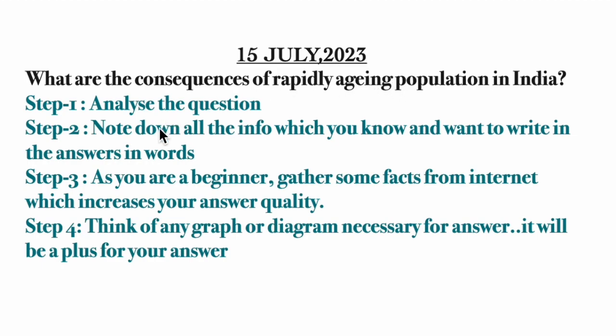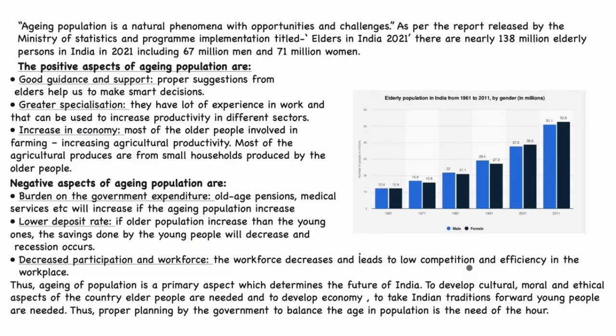Close your eyes and start thinking about the positive aspects and the negative aspects. Writing the mains answer daily will improve the accuracy and efficiency of your thinking — you can think very fast. So let's start with the answer. I'm starting it with a quote: 'Aging population is a natural phenomenon with opportunities and challenges.'